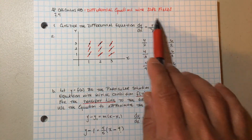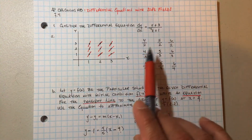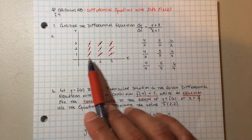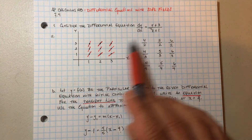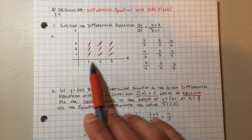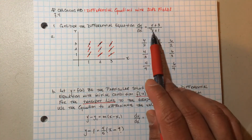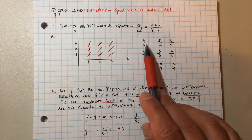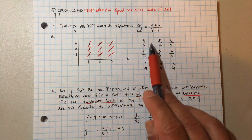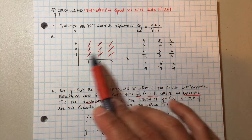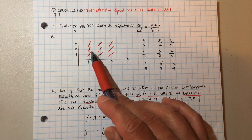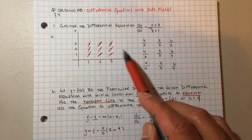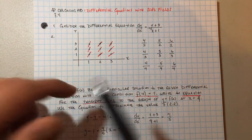They're going to give you something like this — I just made this up. At each point, you plug it in. At the point (1, 1), when x equals 1 and y equals 1, you get (1+3)/(1+1) = 4/2, so the slope is 2. You just graph it as best you can.